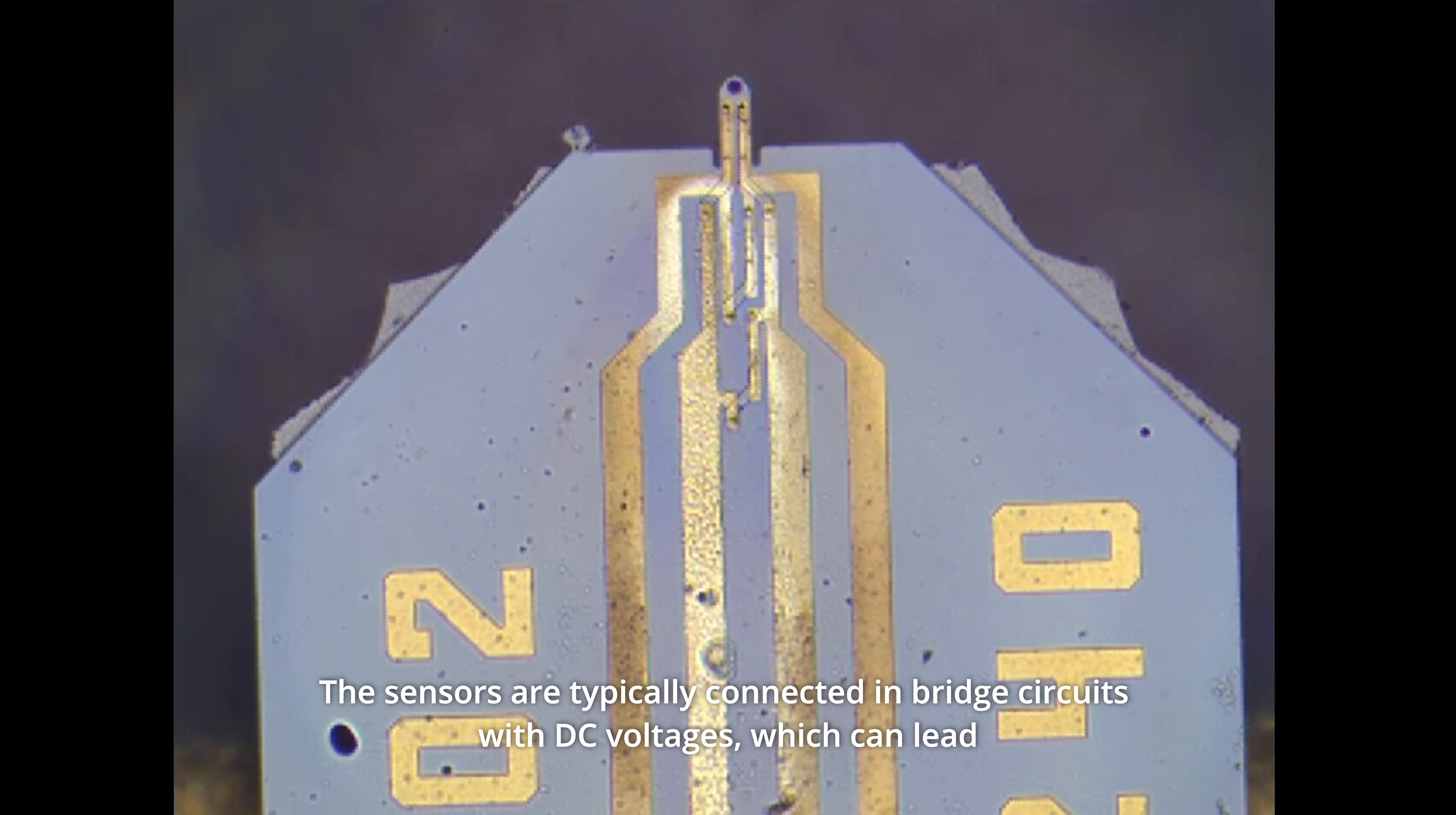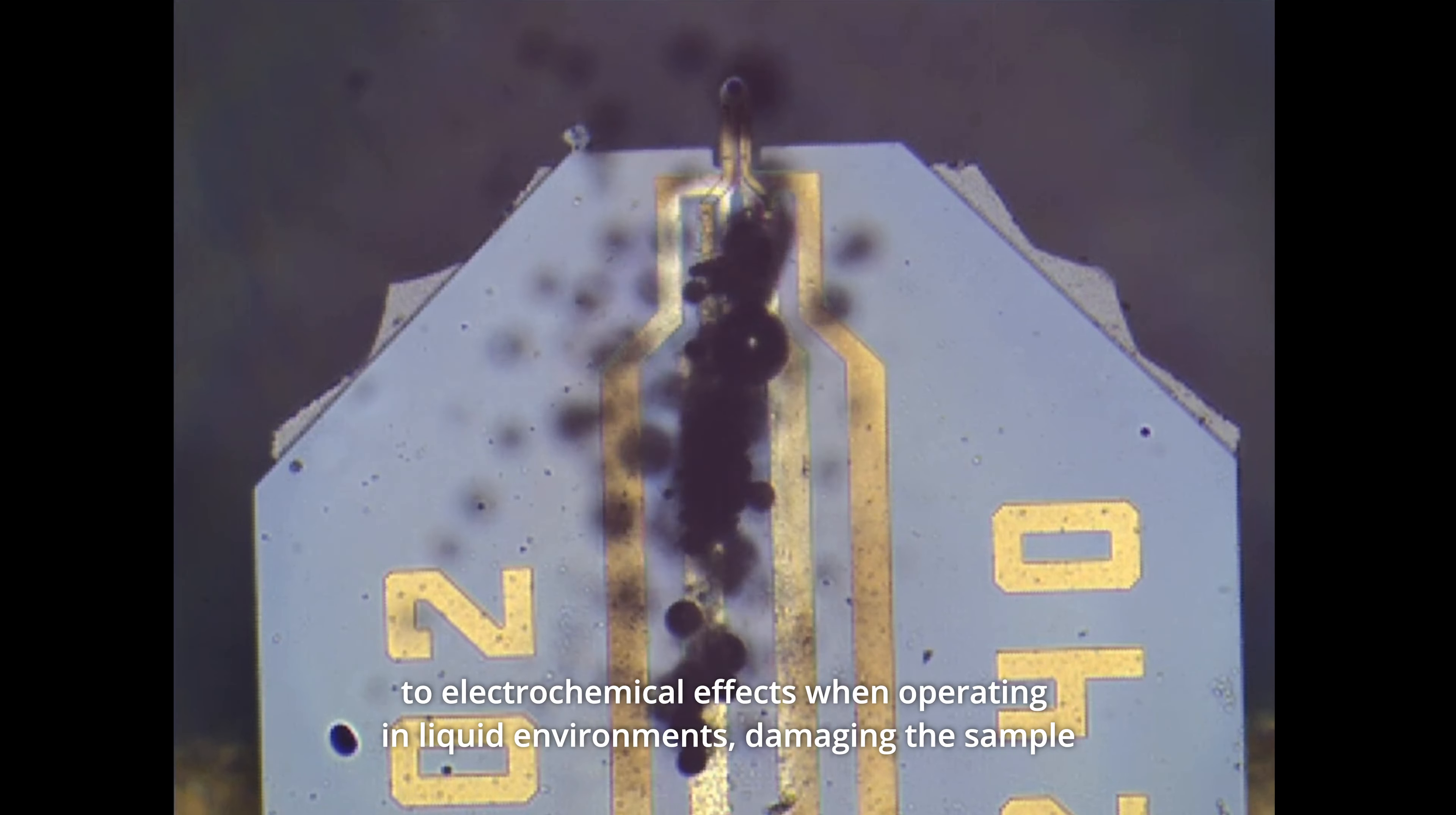The sensors are typically connected in bridge circuits with DC voltages, which can lead to electrochemical effects when operating in liquid environments, damaging the sample and the cantilever.